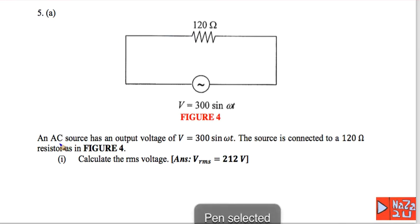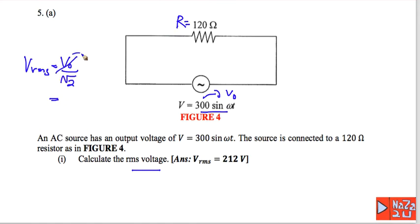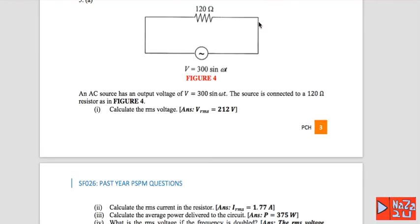Number five: an AC source has output voltage 300 sine omega T, connected to a 120 ohm resistor. Calculate the RMS voltage. V naught is 300, so V rms equals V naught divided by square root of 2, giving V rms equal to 212 volts.